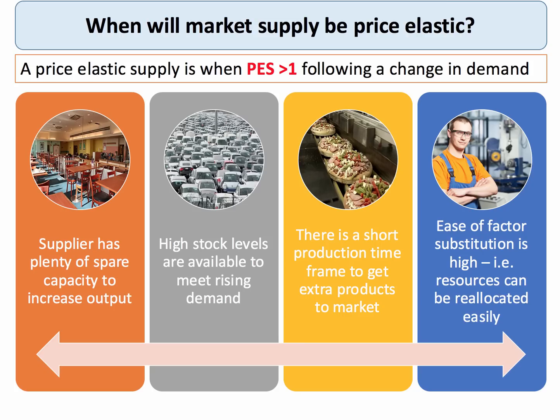When will market supply tend to be price elastic? Elasticity is when the coefficient of elasticity is greater than one following a change in demand. Supply tends to be price elastic when the supplier has plenty of spare capacity to increase output, operating within their production possibility frontier.